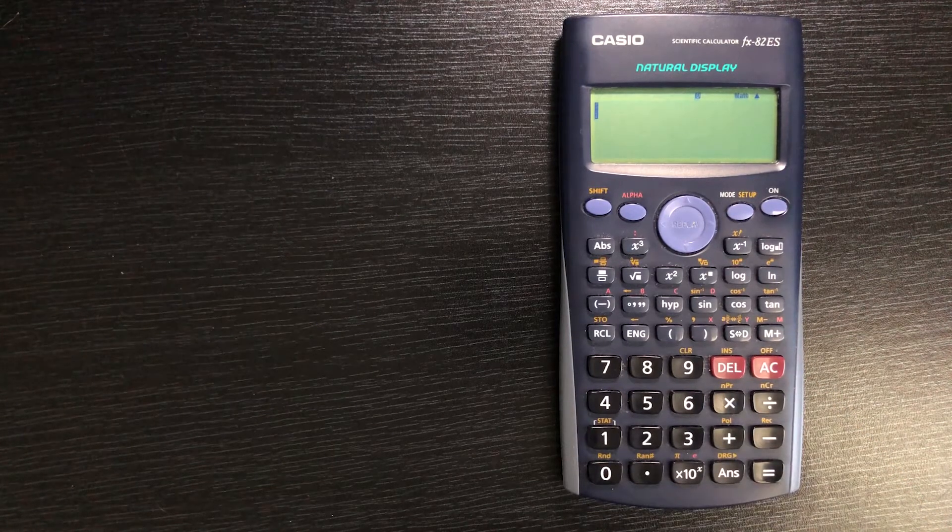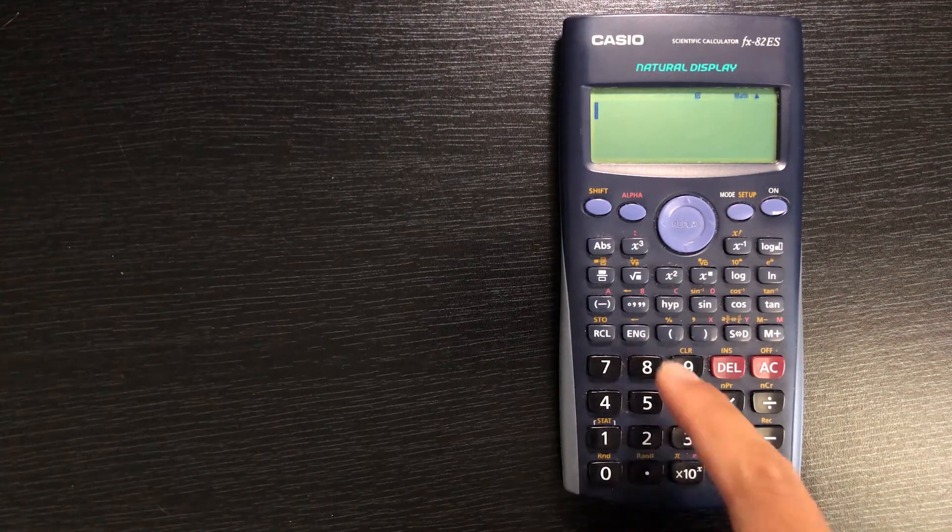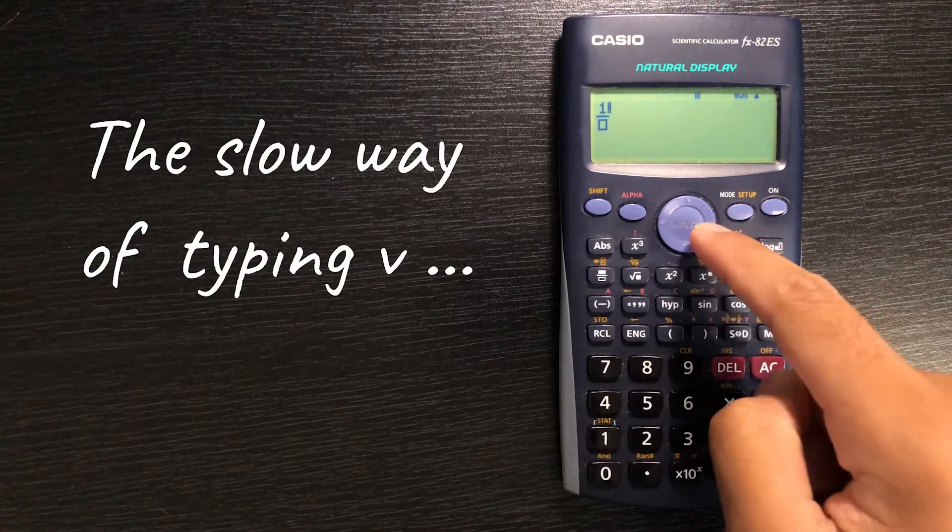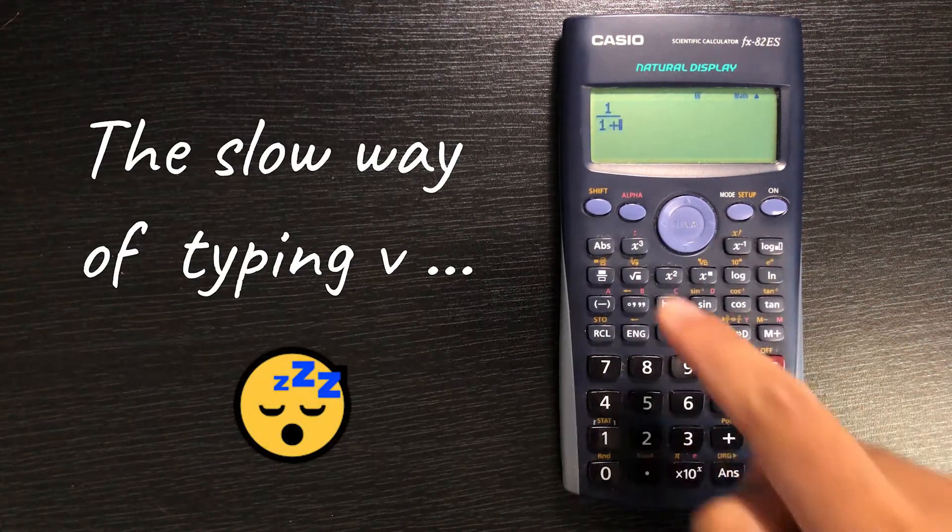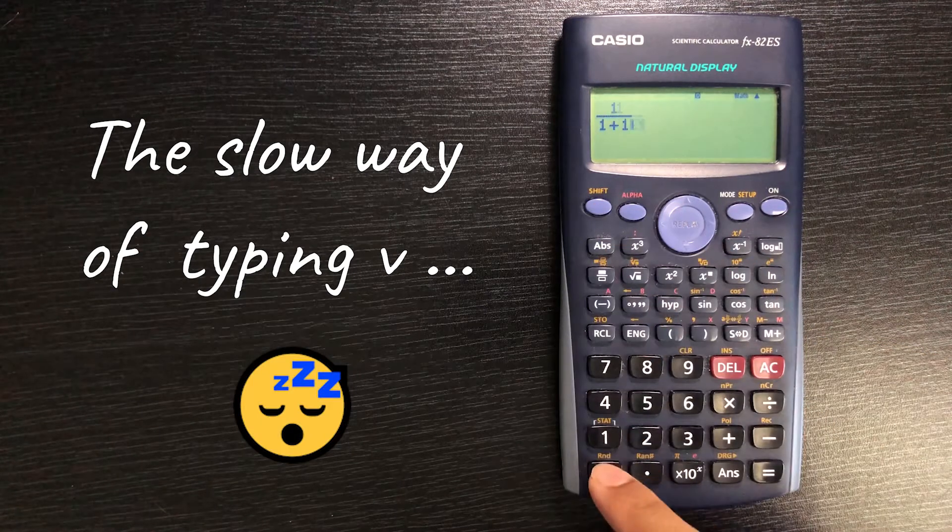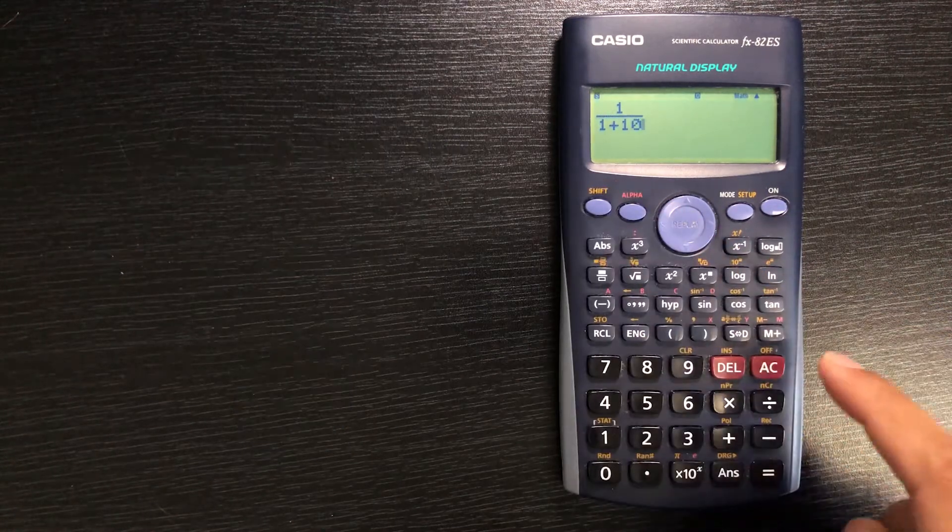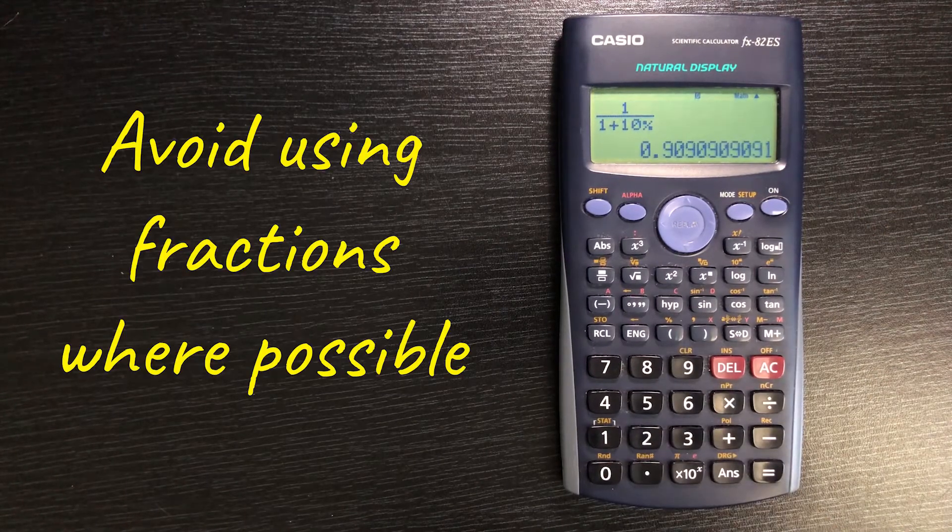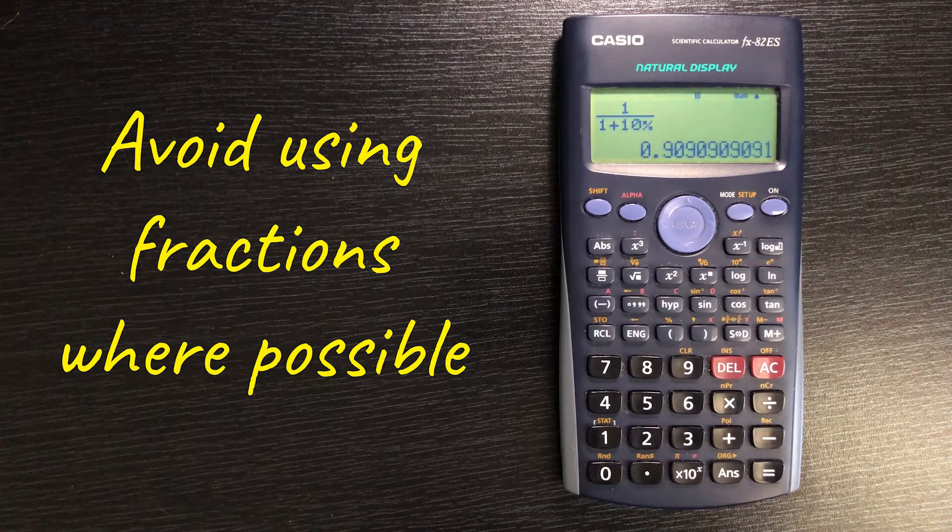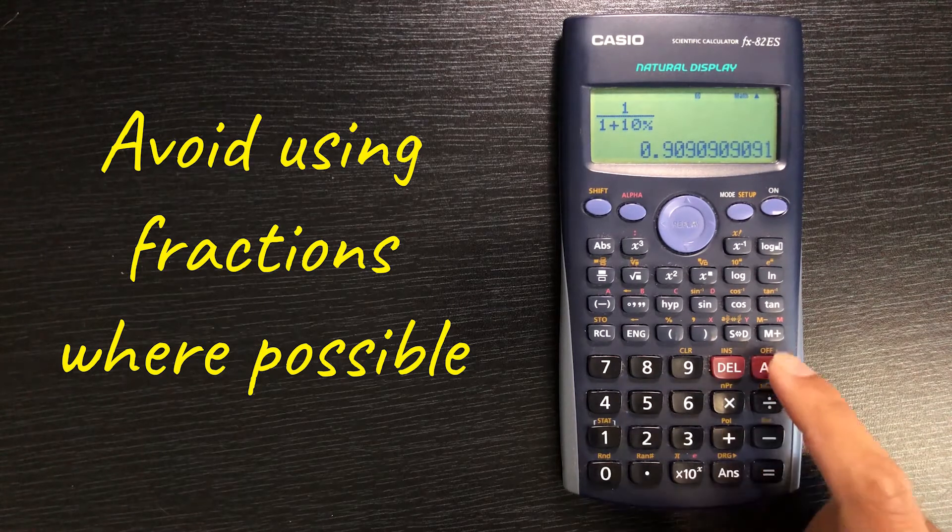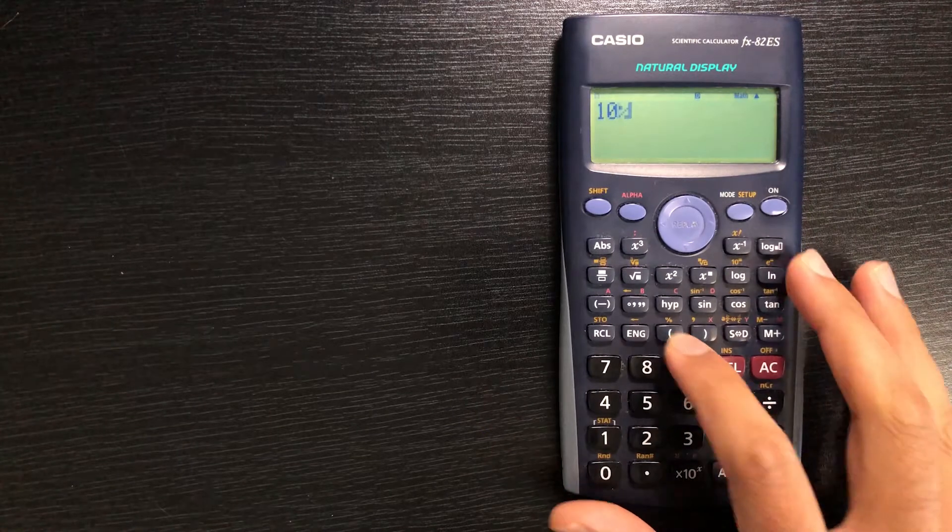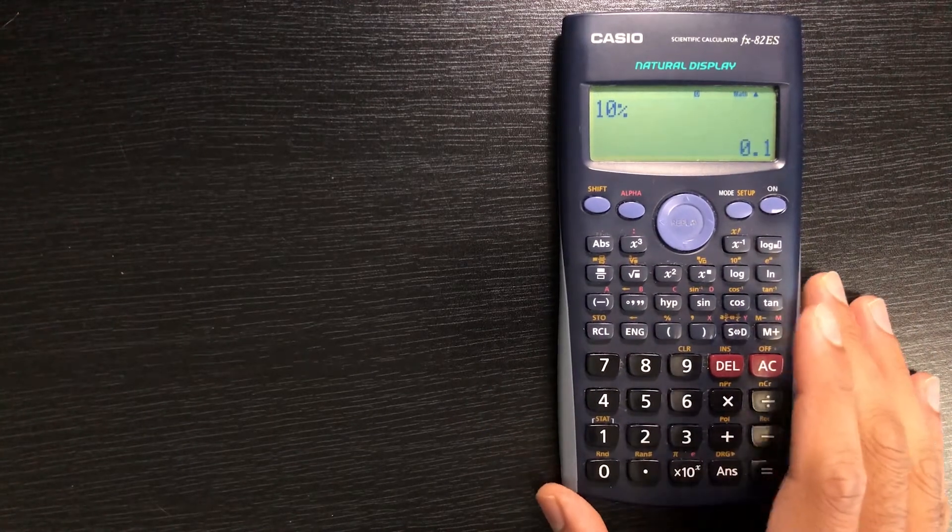Now you would have noticed how I typed in V. For most people they would set up an equation like this: 1 over 1 plus I, and they would use 10%, shift, and then they'd find the percent icon and that's how they would write their V. Now this takes a lot of time and you should really learn how to show your percentages as decimals.